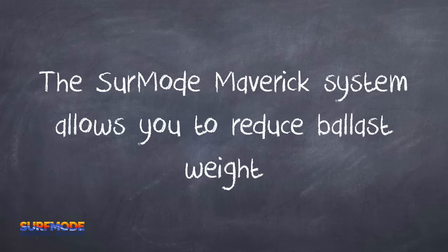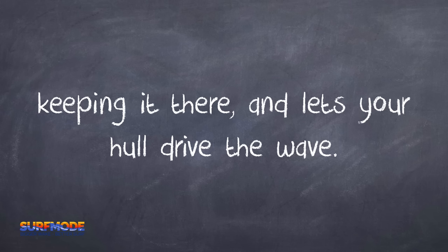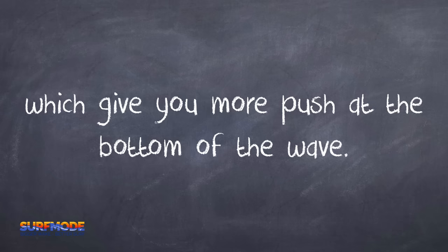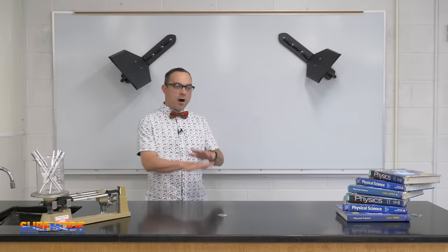The Surf Mode Maverick system allows you to reduce ballast weight because it literally pulls your boat into the water, keeping it there, and lets your hull drive the wave. Forming the wave with lateral displacement makes the wave wider, which gives you more push at the bottom of the wave.